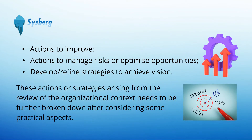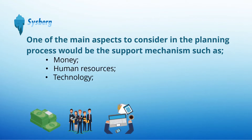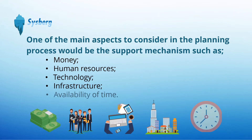These actions or strategies arising from the review of the organization context need to be further broken down after considering some practical aspects. For example, can the proposed action be implemented in a real scenario? After all, how much you want to achieve your objectives depends upon your capability to achieve. One of the main aspects to consider in the planning process would be the support mechanism, such as money, human resources, technology, infrastructure, and availability of time, to get an idea of how much you can achieve in a given time frame.